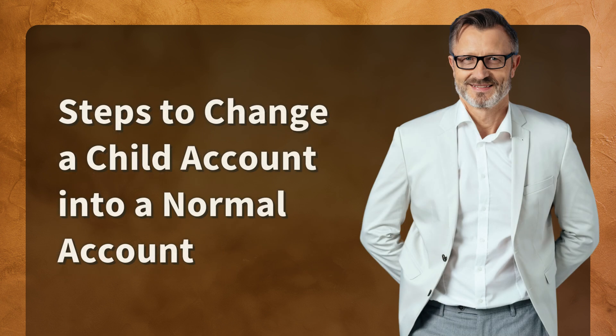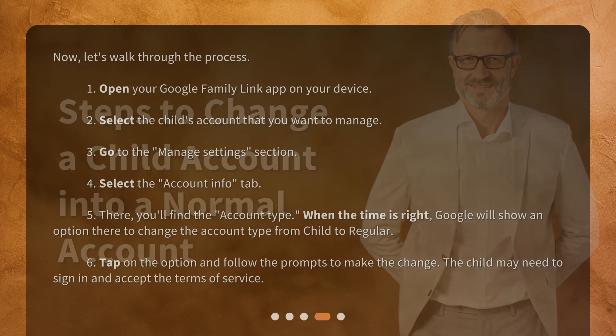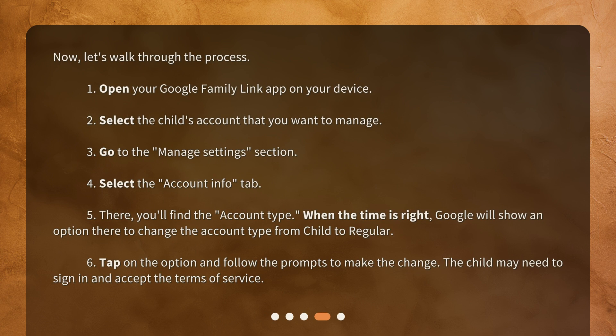Now let's walk through the steps to change a child account into a normal account. Step 1: Open your Google Family Link app on your device. Step 2: Select the child's account that you want to manage. Step 3: Go to the Manage Settings section. Step 4: Select the Account Info tab.